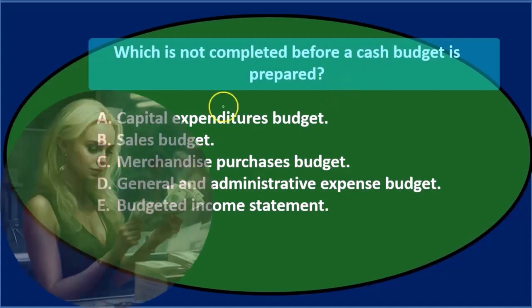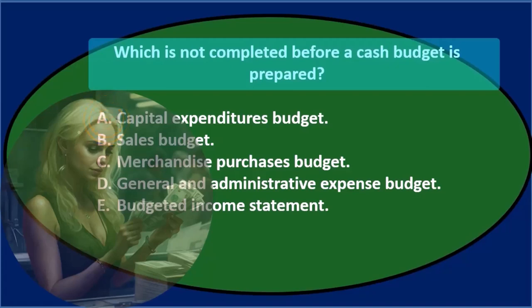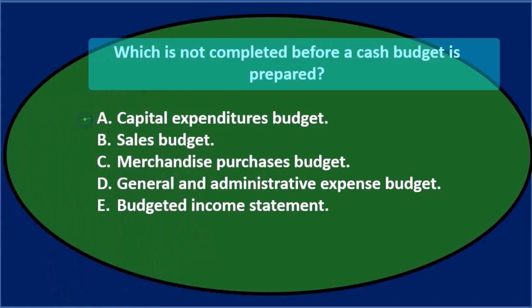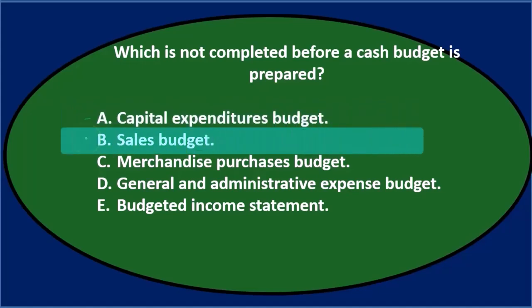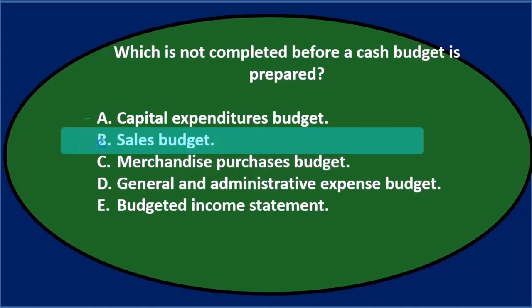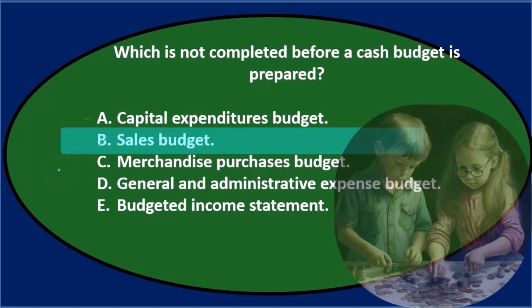Let's go through these to see which we would not have to complete before the cash budget — in other words, what comes at the very end of the budgeting process. A. Capital expenditures budget — it's not one of the first things we do, but we might need it before the cash budget since capital expenditures involve buying property, plant, and equipment, which uses cash. Let's keep that for now. B. Sales budget — that's one of the first things we do, definitely before the cash budget, since it's at the top of the list.